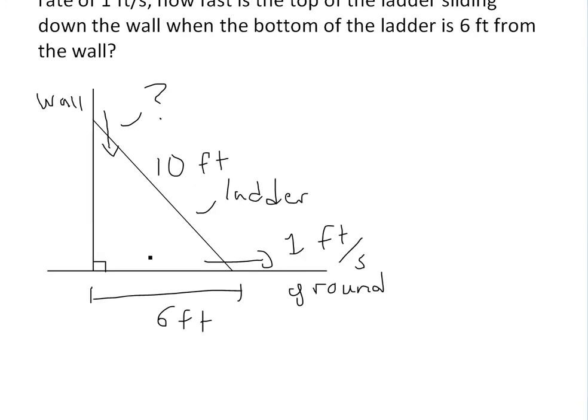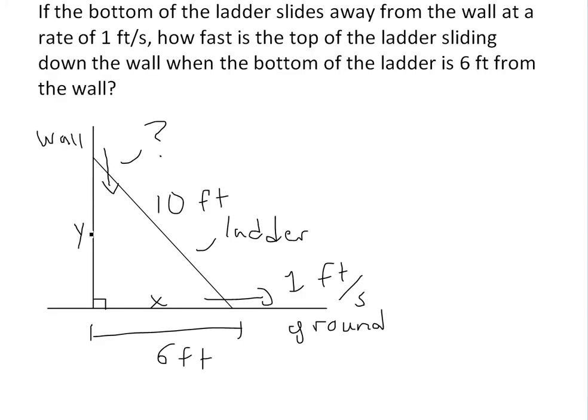What we could do is let the distance of the ladder to the bottom from the wall be x, and the distance of the ladder from the ground on the vertical side as y. So we can consider this 1 foot per second as dx over dt, or the rate of change of x versus time, or x prime as a derivative.